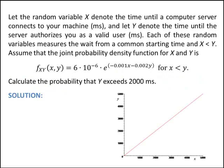Let the random variable X denote the time until the computer server connects to your machine, and let the random variable Y denote the time until the server authorizes you as a valid user. Both X and Y are random variables that measure wait time at a starting point, and we're given the extra condition that the random variable Y is greater than X. We are given also the joint probability density function for X and Y, and here's the joint density function.